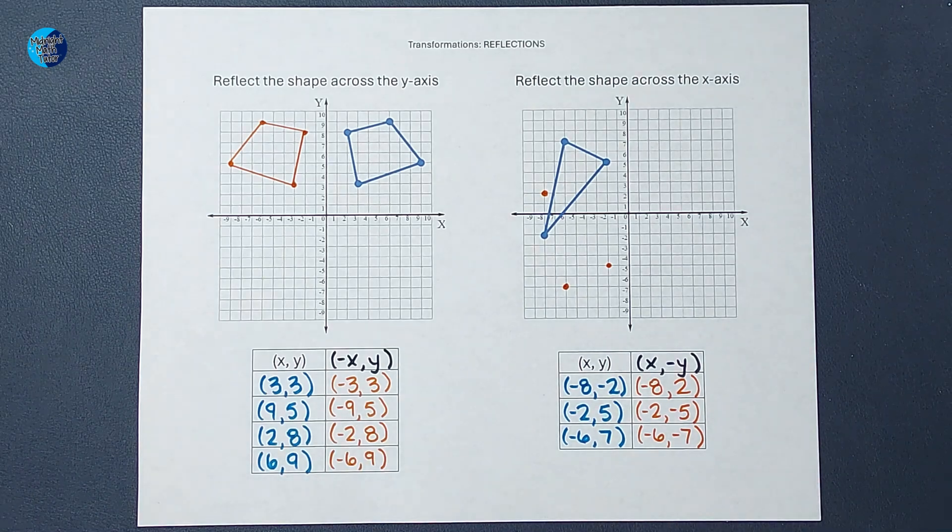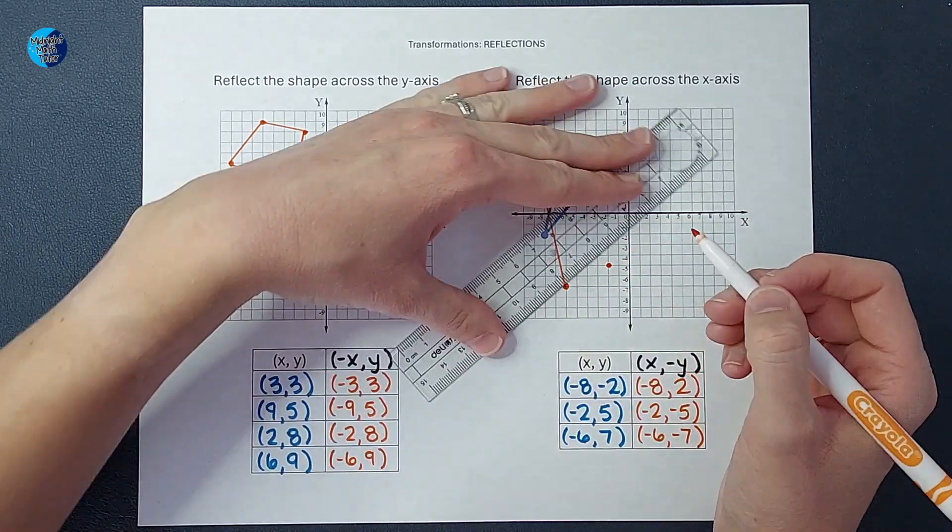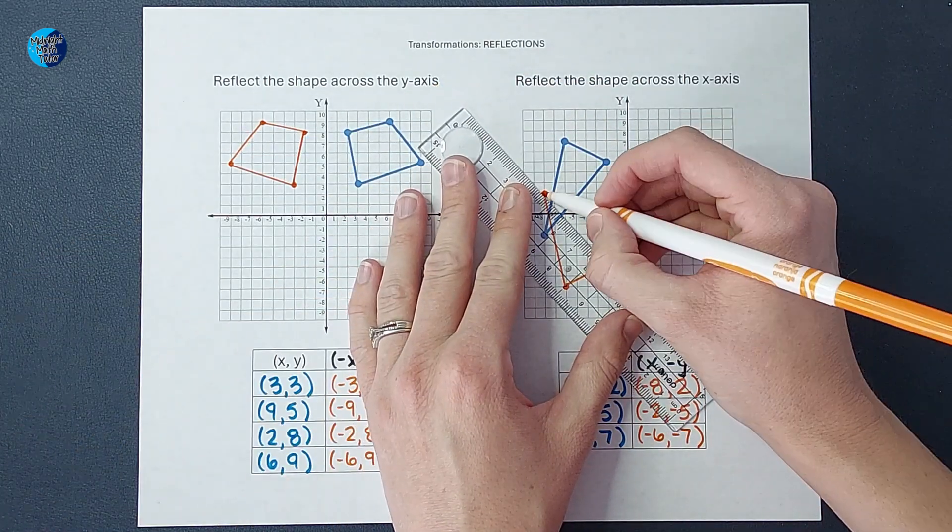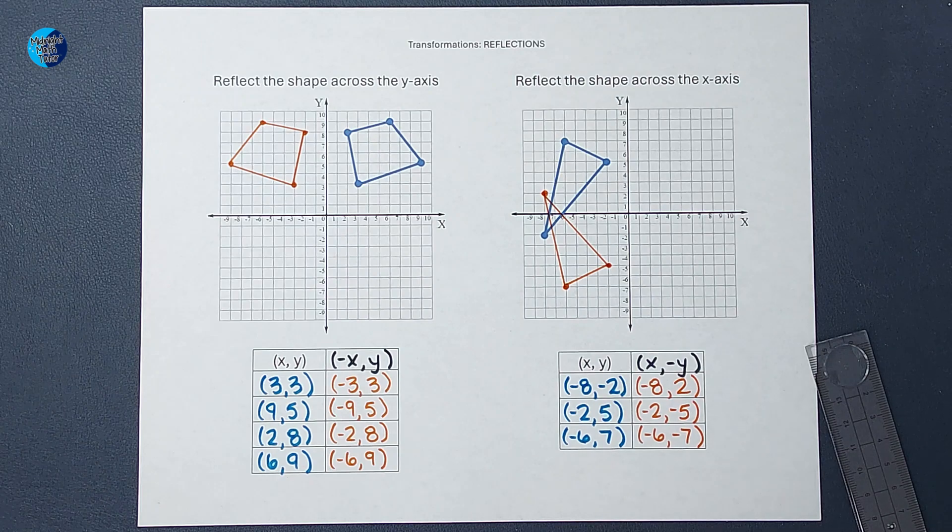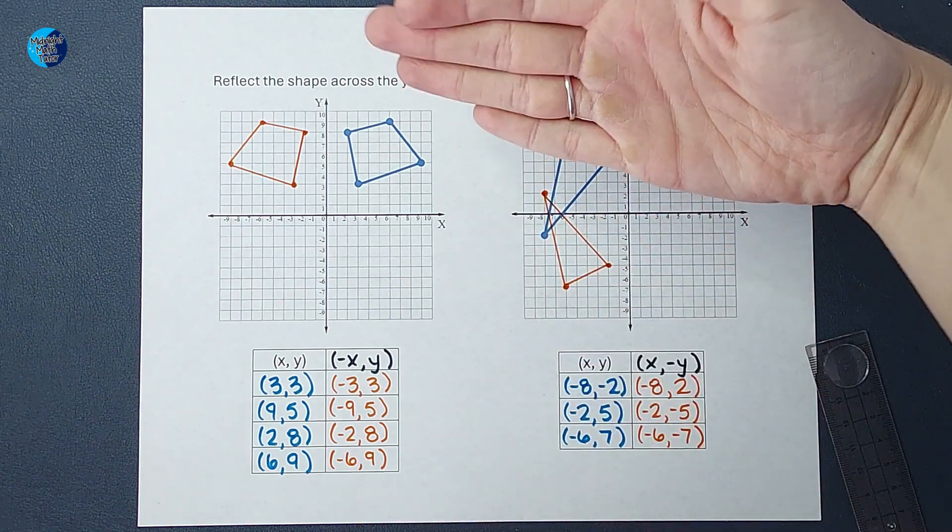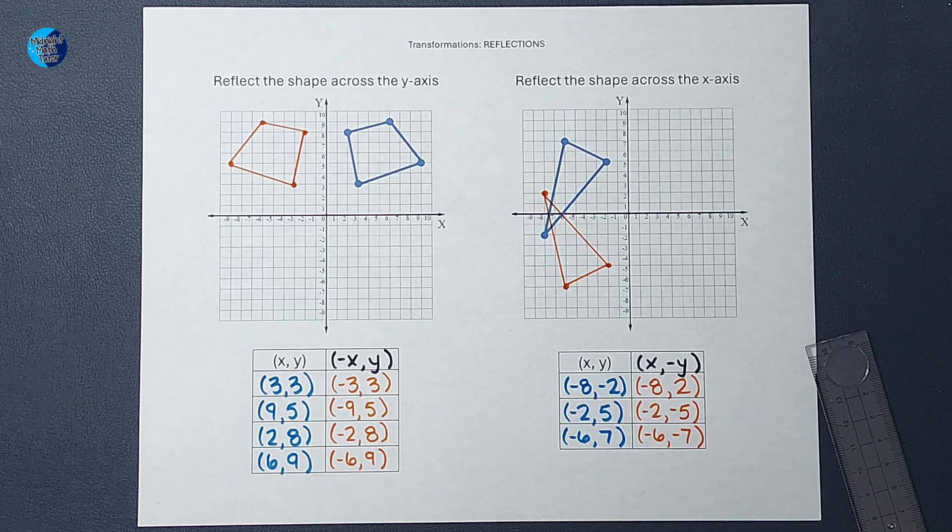So let's see what happens when I plot these points. All right, there we go. Now we're going to connect the dots. And there we go. You see how it crosses over itself, but it's still that reflection, right?